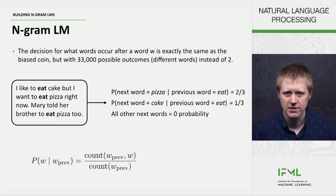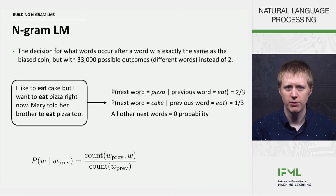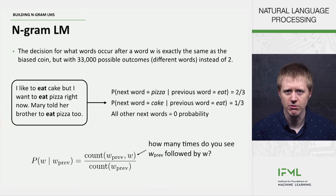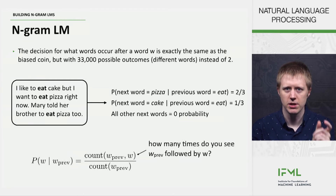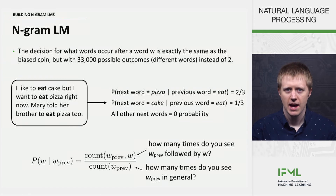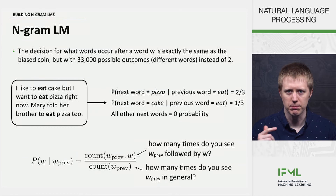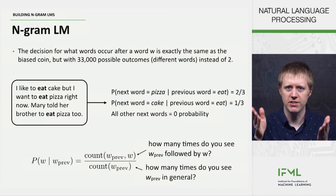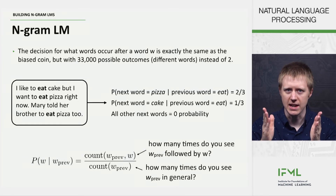More formally, the probability of a word w given a previous word w_prev equals the count of (w_prev, w) — how many times we see w_prev followed by w — divided by the count of w_prev overall. So for 'eat': we see it three times total; 'eat pizza' appeared twice; 'eat cake' appeared once. These are exactly the counts we computed.